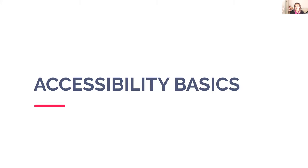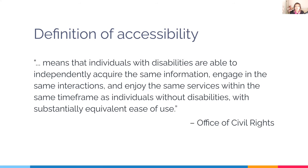We're going to start with some accessibility basics, starting with the definition of accessibility. It means that individuals with disabilities are able to, on their own, get the same information, engage in the same interactions, and enjoy the same services within the same time frame as individuals without disabilities, with equivalent ease of use. This definition is from the Office of Civil Rights.